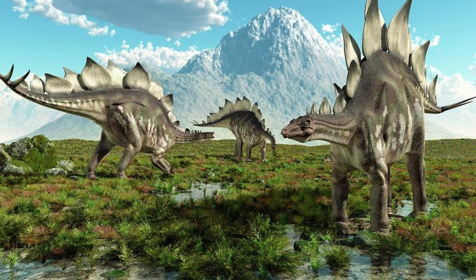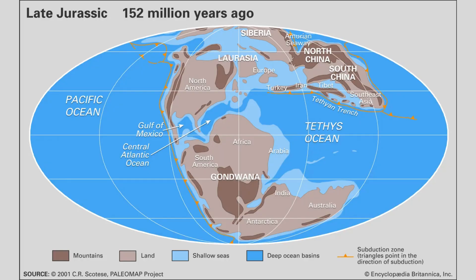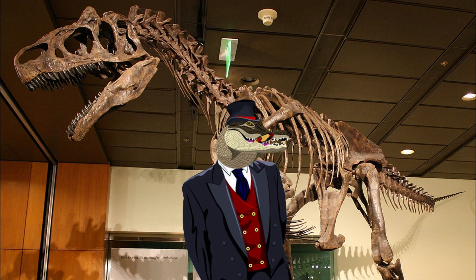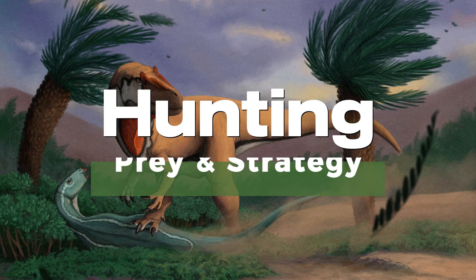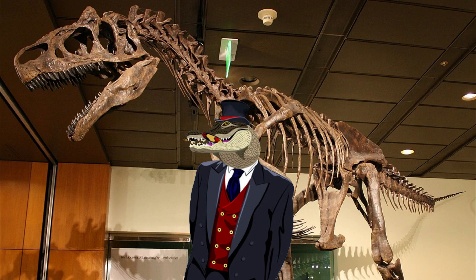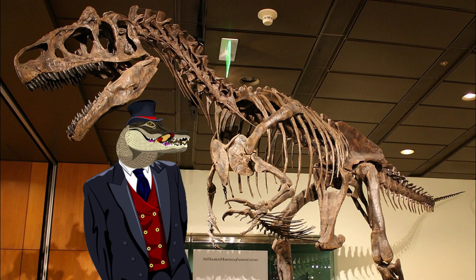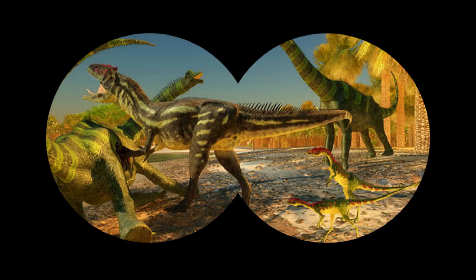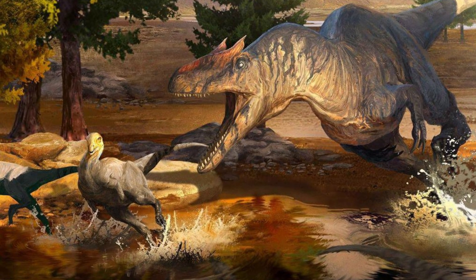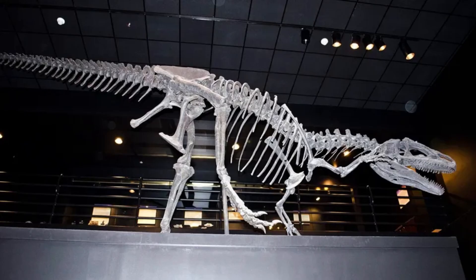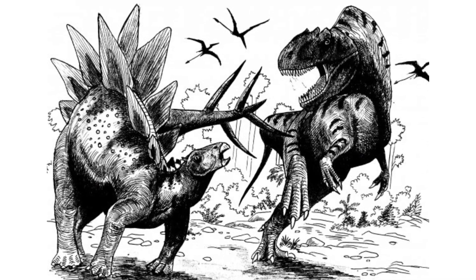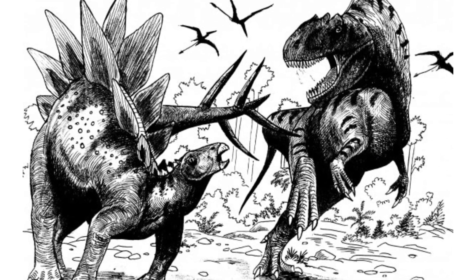As with any ancient ecosystem, our understanding of Allosaurus's habitat is based on interpretations of geological and paleontological evidence, and ongoing research continues to refine this. Allosaurus was a carnivorous dinosaur, and its hunting strategies and behaviour are a topic of great interest among paleontologists. While we can't observe Allosaurus directly since they are extinct, scientists have inferred aspects of its hunting behaviour based on anatomy, fossil evidence, and comparisons with modern predators. Allosaurus would have likely used an ambush and pursuit strategy depending on the prey, relying on its keen sense of smell and vision to detect prey from a distance, then using its powerful hind limbs to quickly close the gap.